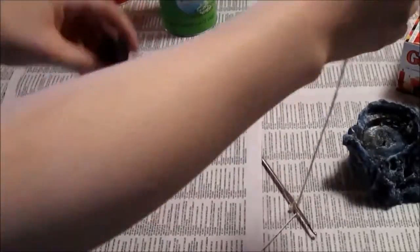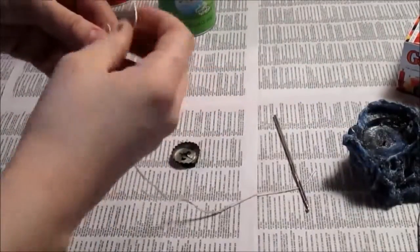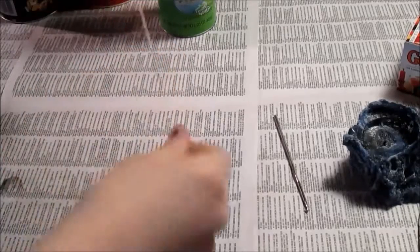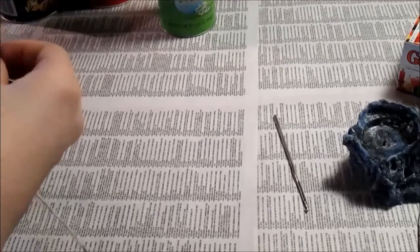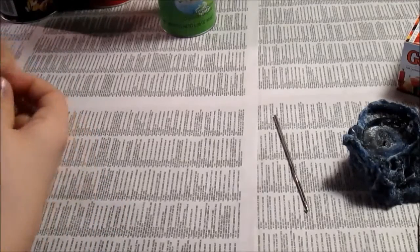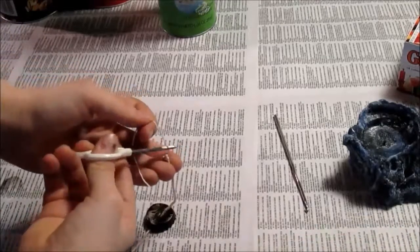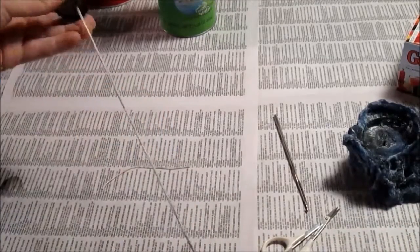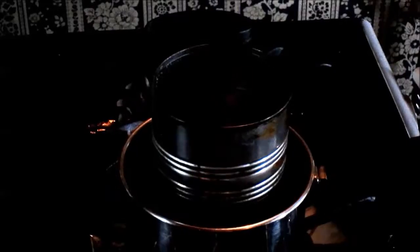At this point, you're going to want to grab your weight. Now, the weight can be anything you want as long as it doesn't set on fire. I wouldn't suggest anything plastic such as buttons. However, I have seen people use them before. I'm going to be using a bottle cap myself. The point of the weight is to hold the wick in place while you're pouring the wax into the mold. So you're going to want something heavy, sturdy, with a flat bottom. And for attaching it, just tie it onto the end of your wick.